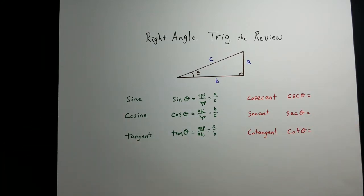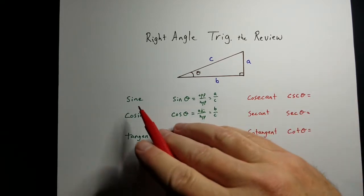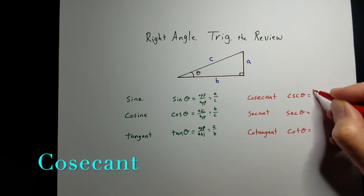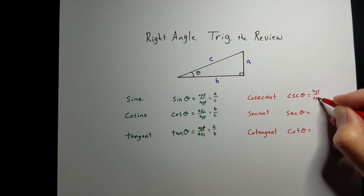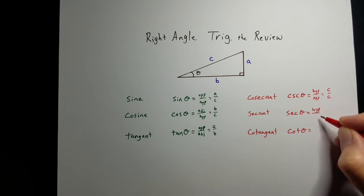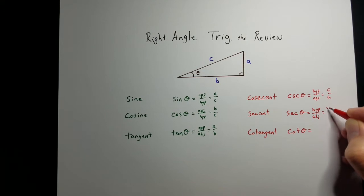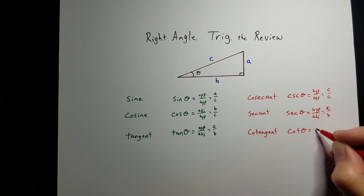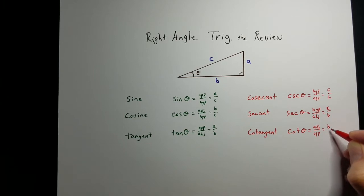Now those are the main trig functions you're going to use, but there are three others that do come in handy occasionally. They are the upside down versions. The upside down version of sine is cosecant, so that's going to be hypotenuse over opposite. In this case, it's going to be C over A. Secant is hypotenuse over adjacent, that's going to be C over B. The last one is cotangent, that's going to be adjacent over opposite. In this case, that's going to be B over A.